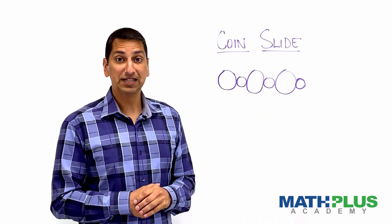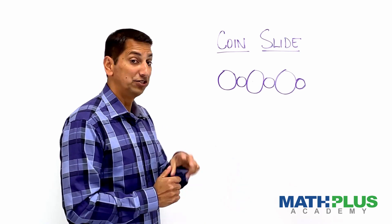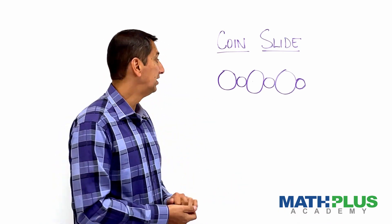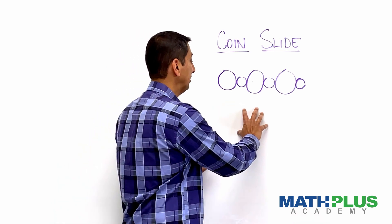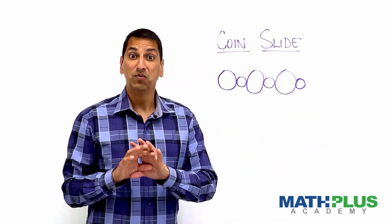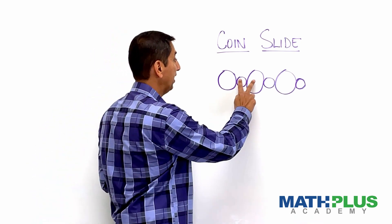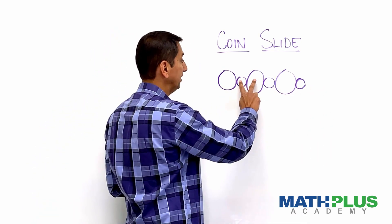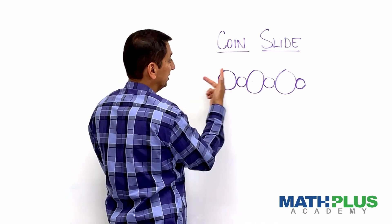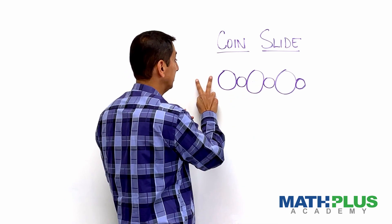Your job is to try and move them two at a time — two adjacent coins at a time — so that you can get three big ones together and three little ones together with no spaces in between. And when you move them, you can only slide them. You can't take two and flip them around so that the big one ends up on one side and the small one on the other.